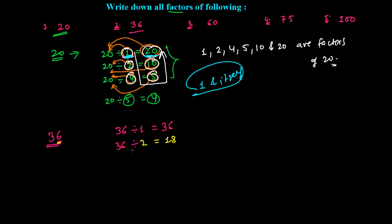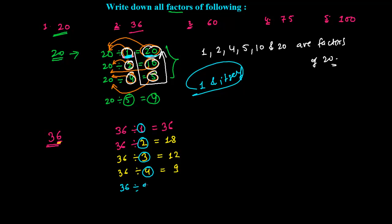36 is divisible by 3 also, in 12 times. Similarly, 36 is divisible by 4 also, in 9 times. Are you watching any more possibilities? Yes — 36 divided by 6 gives 6 times.